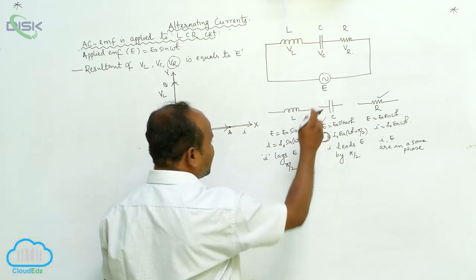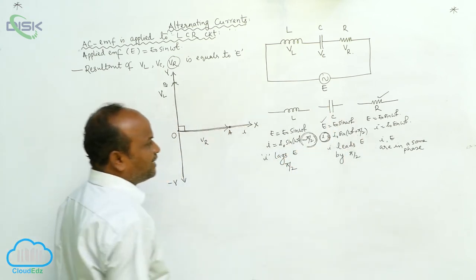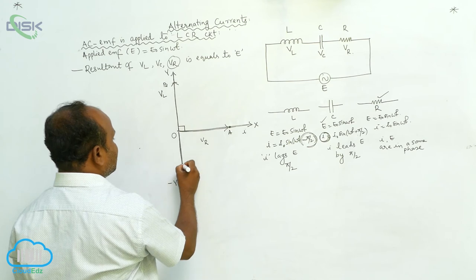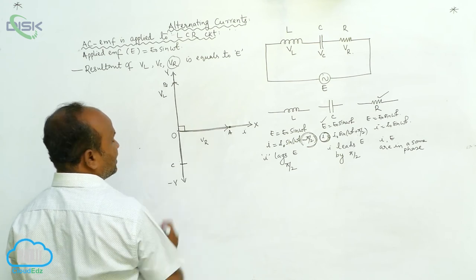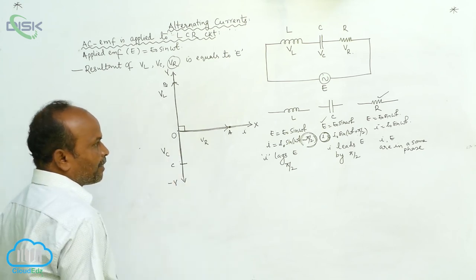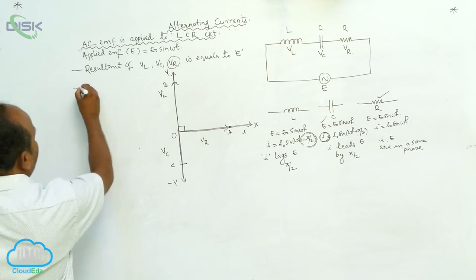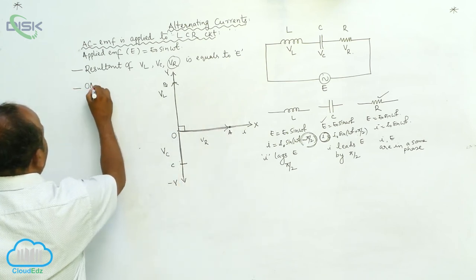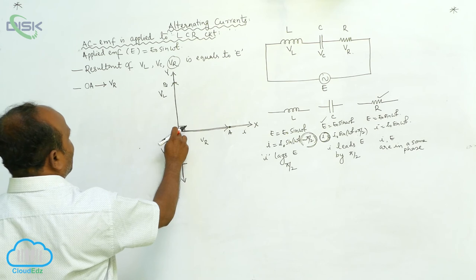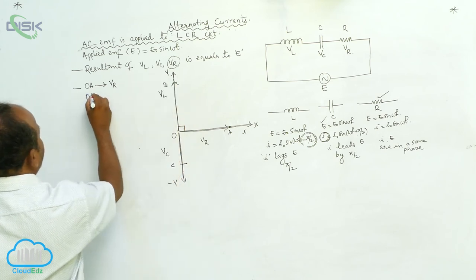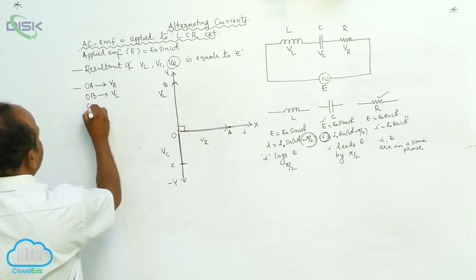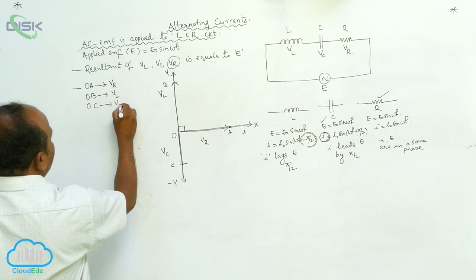In the case of the capacitor, current is leading voltage by 90 degrees — that is plus 90 degrees. Therefore, Vc is represented by Oc along the negative y-axis. So: Oa represents voltage across the resistance, Ob represents voltage across the inductor, and Oc represents voltage across the capacitor.